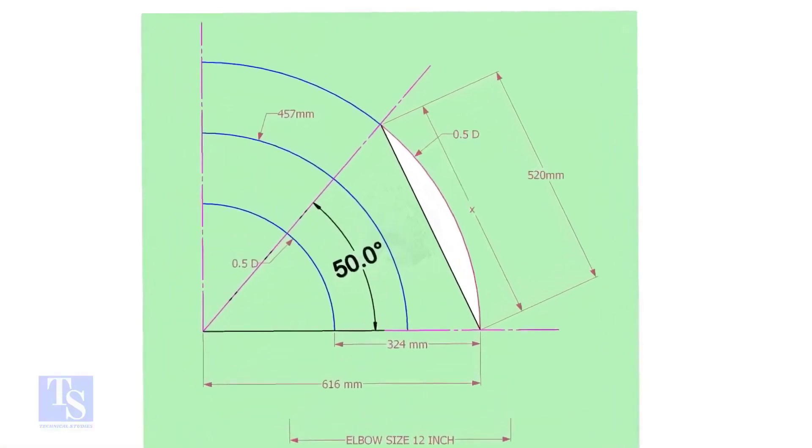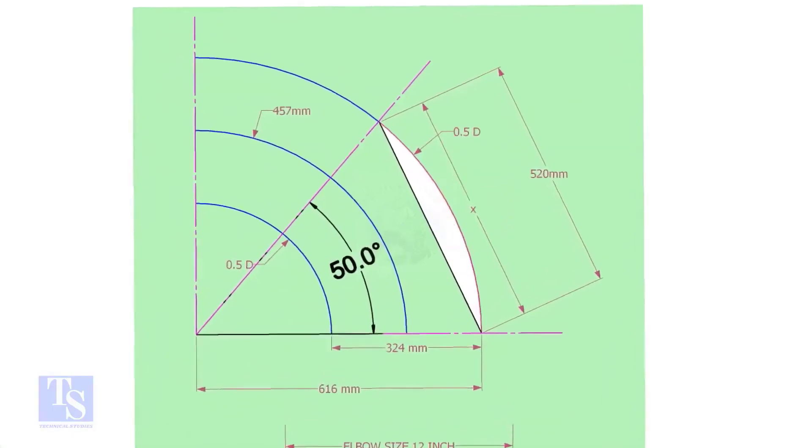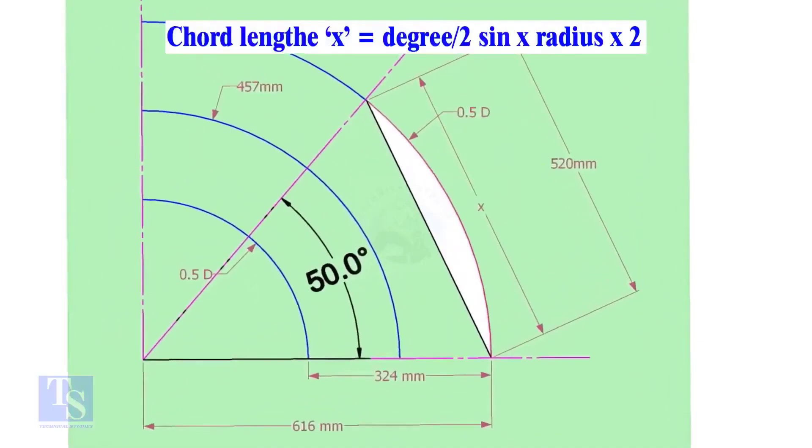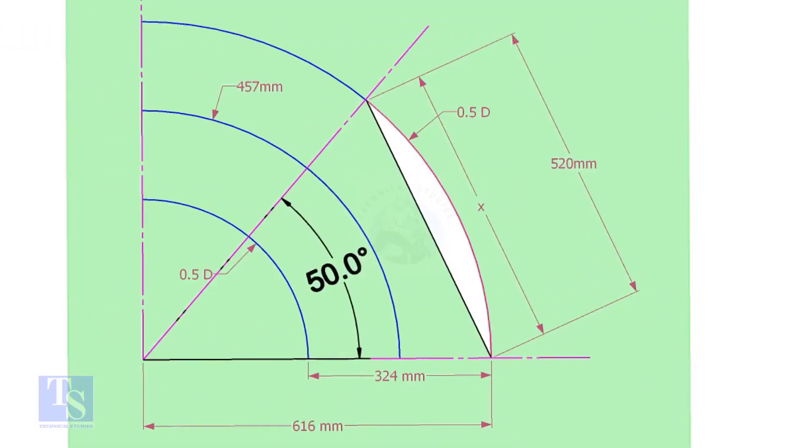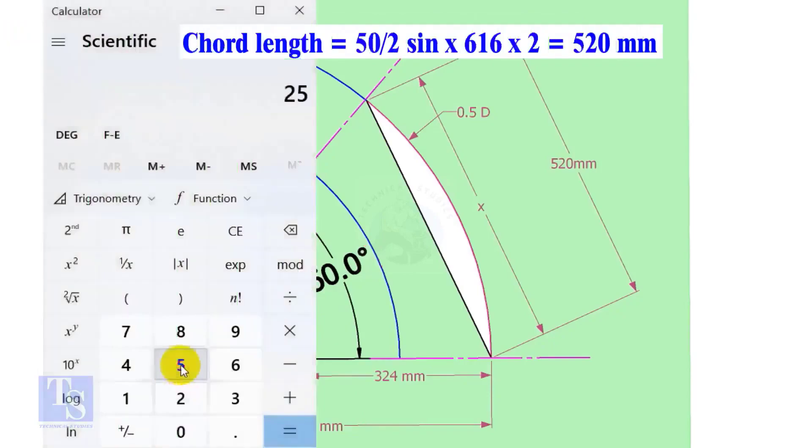Let us calculate the cord length for 50-degree of the outer arc. Cord length x equals half-degree sine multiplied by 2 times radius. Here the degree is 50, and the radius is 616mm. Cord length equals 25 sine multiplied by 616, multiplied by 2, equals 520mm.